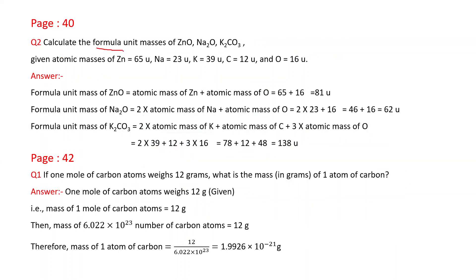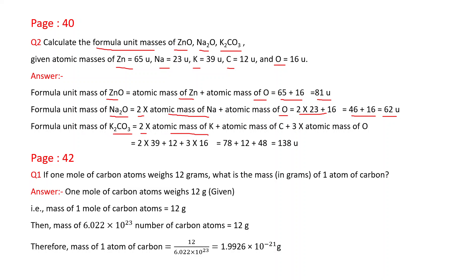Calculate the formula unit masses of ZnO, Na₂O, and K₂CO₃, given atomic masses for zinc, sodium, potassium, carbon, and oxygen. Formula unit mass of ZnO: 65 + 16 = 81 u. Formula unit mass of Na₂O: (2 × 23) + 16 = 62 u. Formula unit mass of K₂CO₃: (2 × 39) + 12 + (3 × 16) = 138 u.